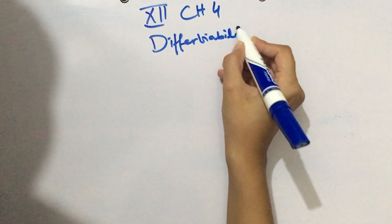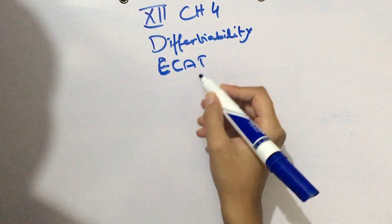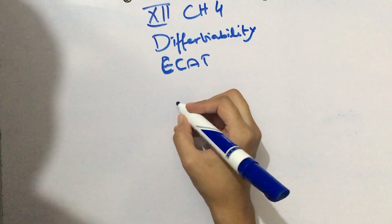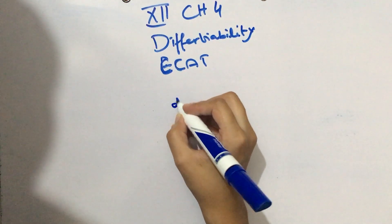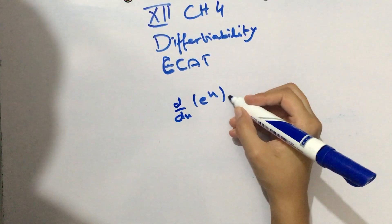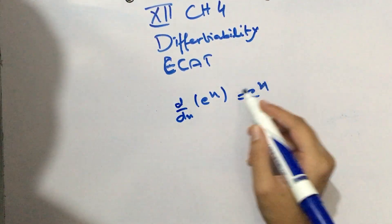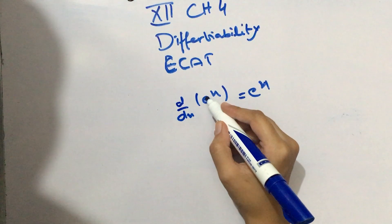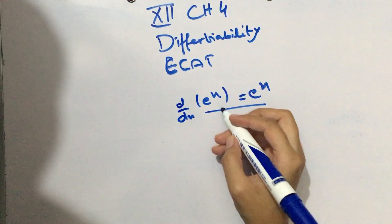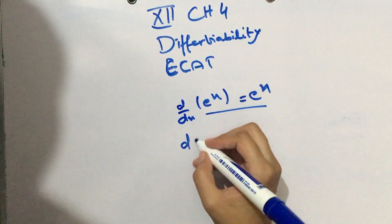In today's video lecture, we discuss some ECAT formulas. We also address a topic that some students are confused about — the derivative of exponential functions. If you have the derivative of an exponential function, it will always remain the same exponential function.